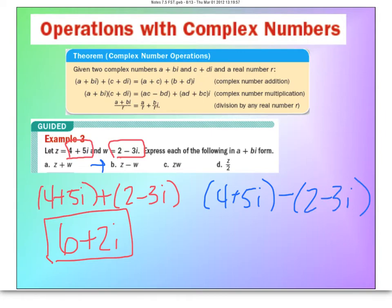Now this one you just have to be careful. We do have a negative that needs to be distributed to both the 2 and the negative 3i. So let's go ahead and do that and see what we get.